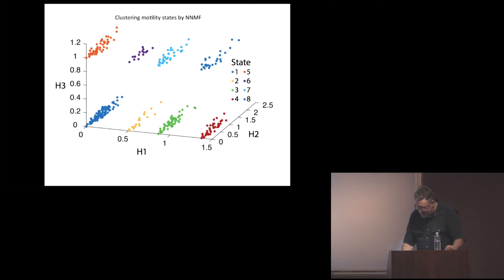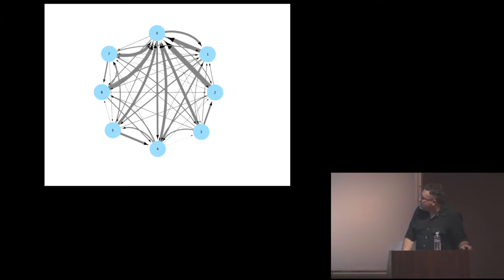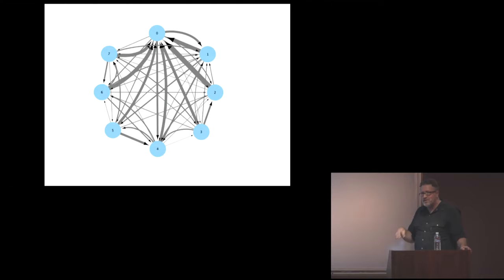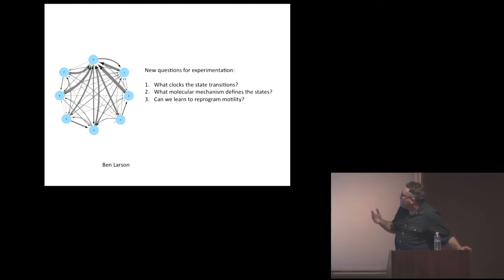The question is how the cell transitions among these eight states. The transition matrix is clearly not symmetrical, meaning detailed balance is violated — it's non-equilibrium. From any given state, there's a strong bias in terms of which state it's going to be in next. It's not completely orderly, there's some stochasticity, but there's clearly some kind of logic guiding what's going on. We'd like to know what makes the cell switch between states, what molecules define the state, and ultimately whether we can learn enough to reprogram how the cell walks — make the cell turn right when we want it to.